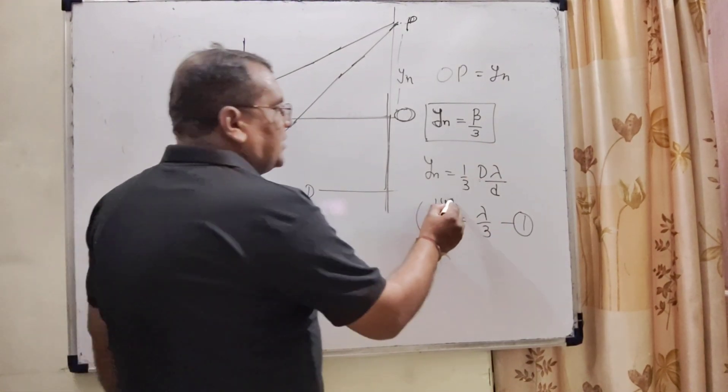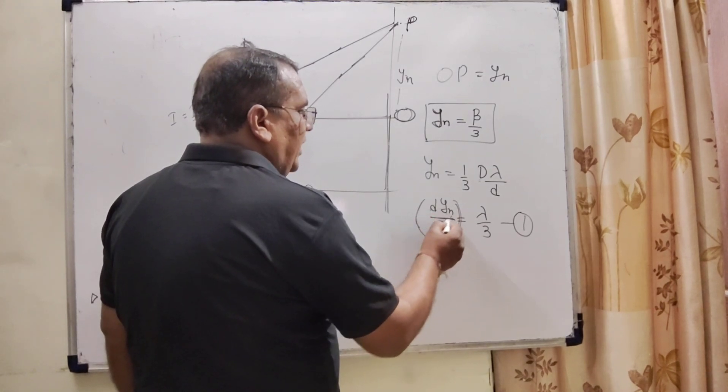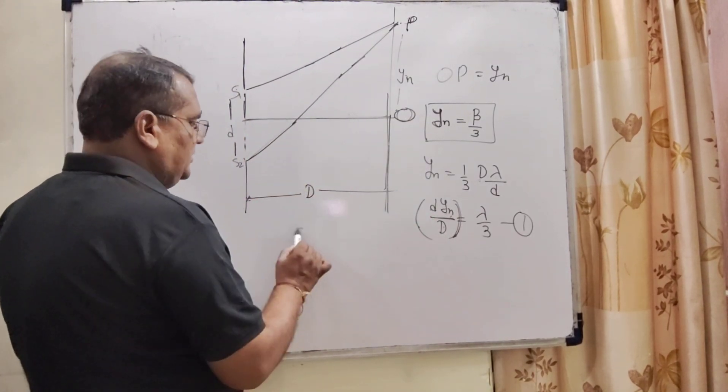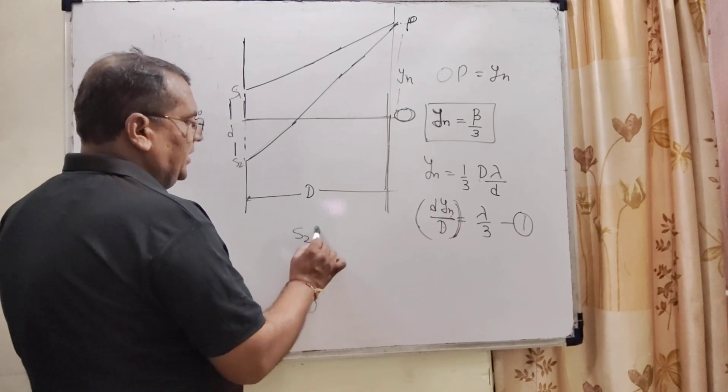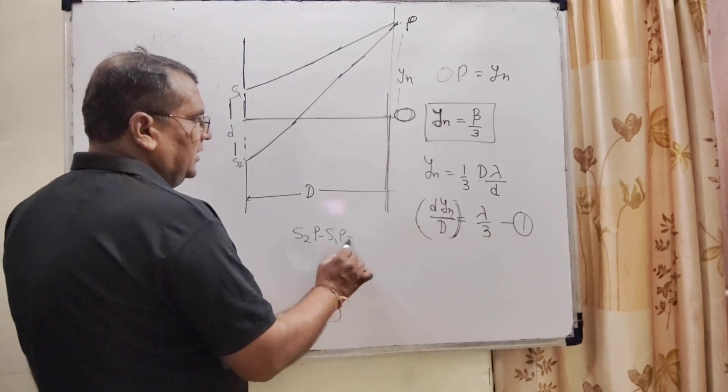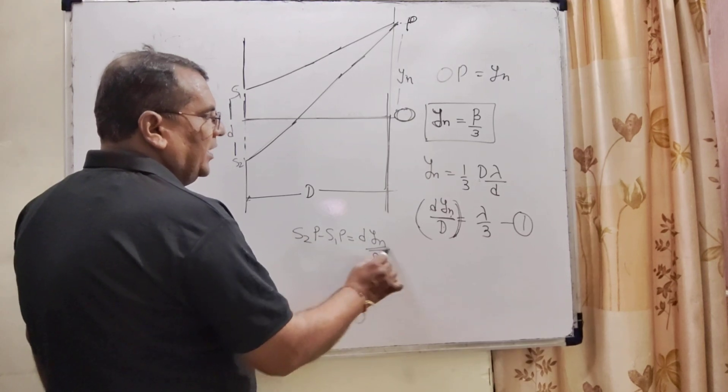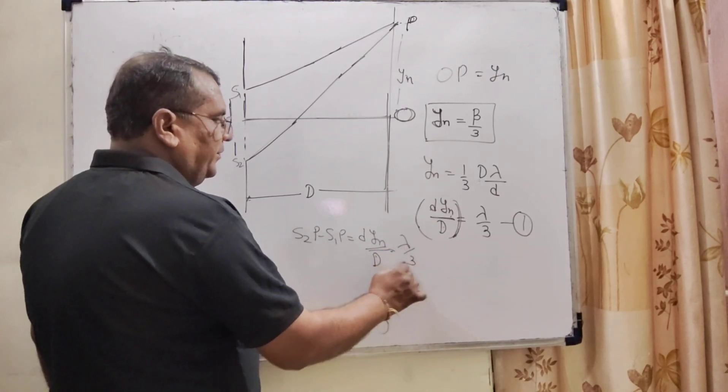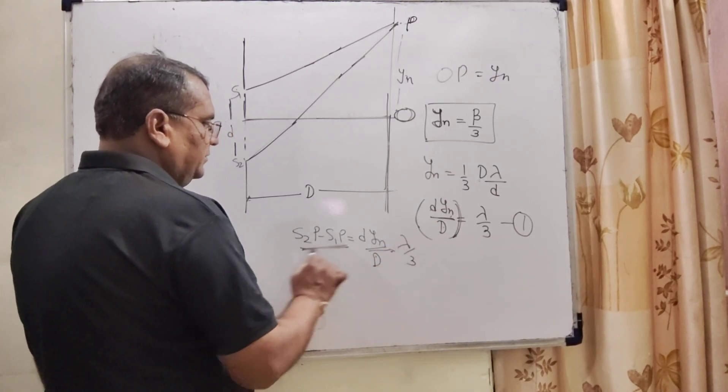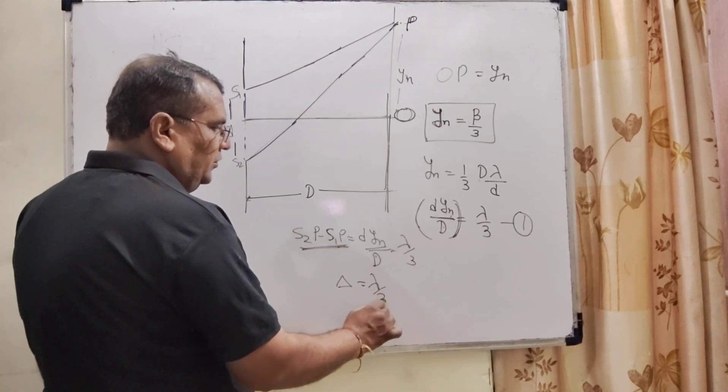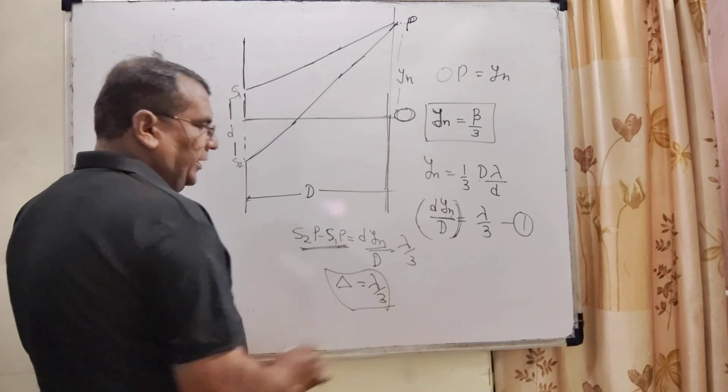And what is actually this? d yn upon D, that is path difference. What is path difference? That is S2P minus S1P is equal to d yn upon capital D and this value is lambda by 3, and this path difference is denoted by delta, which equals lambda by 3.